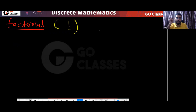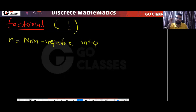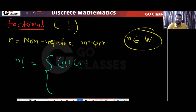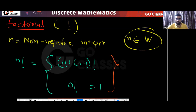The definition: if you have a number which is a non-negative integer — this should belong to the set of whole numbers — then n factorial is basically n multiplied by (n minus one) factorial, and zero factorial is equal to one. This is the definition of n factorial.